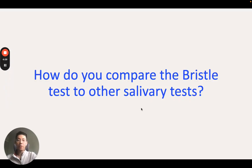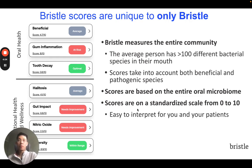How do you compare the Bristle test to other salivary tests? The Bristle test measures the makeup of the entire oral microbiome. The average person has over 100 different bacterial species living in their mouth. Bristle algorithms take these microbiome profiles and calculate seven different health scores to describe how the oral microbiome impacts oral and overall health.